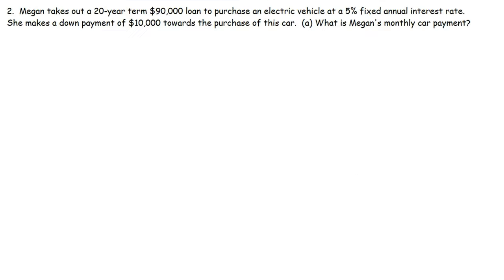Now let's work on another example. It's very similar but slightly different. Megan takes out a 20-year term $90,000 loan to purchase an electric vehicle at a 5% fixed annual interest rate. She makes a down payment of $10,000 towards the purchase of this car. What is Megan's monthly car payment? So let's begin by writing the formula. The monthly payment is going to be the principal or the balance of the loan times the annual interest rate divided by n, and this is all going to be divided by 1 minus (1 plus r/n) raised to the negative nt.